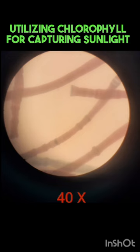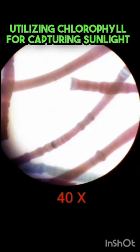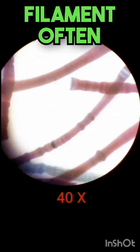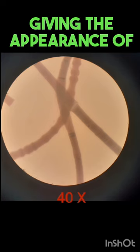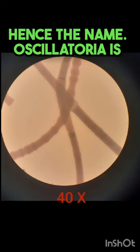Oscillatoria is photosynthetic, utilizing chlorophyll for capturing sunlight and converting it into energy. The cells within the filament often glide collectively, giving the appearance of oscillating movement, hence the name.